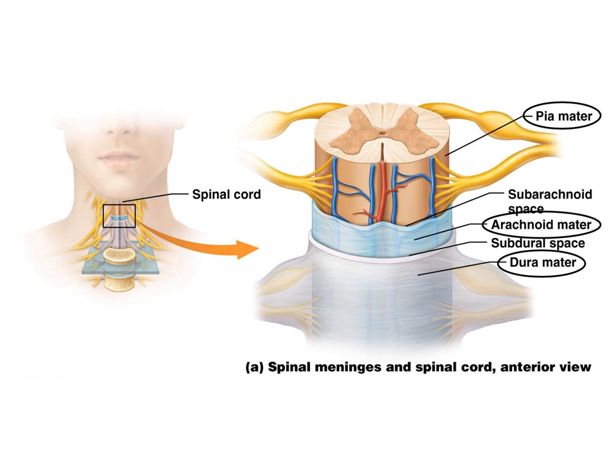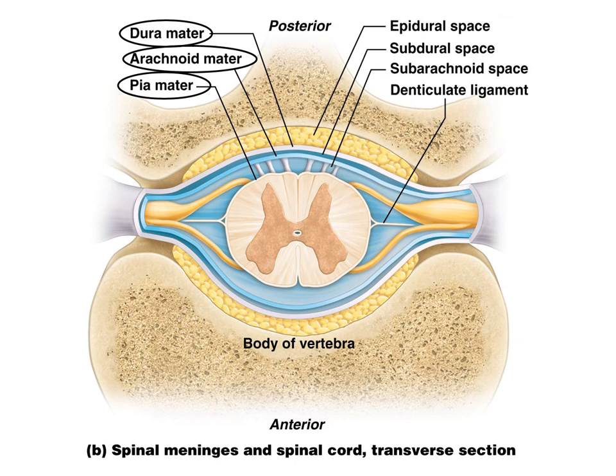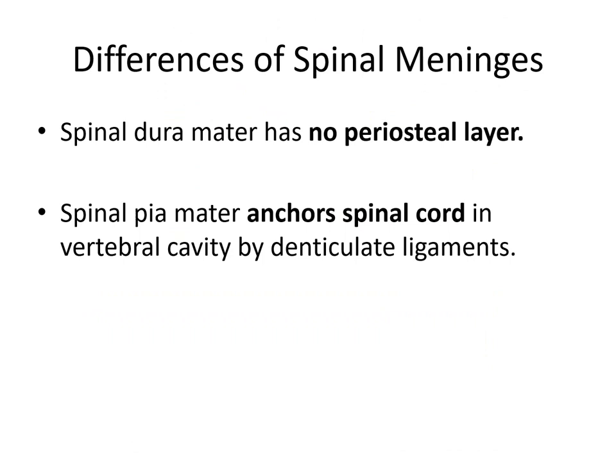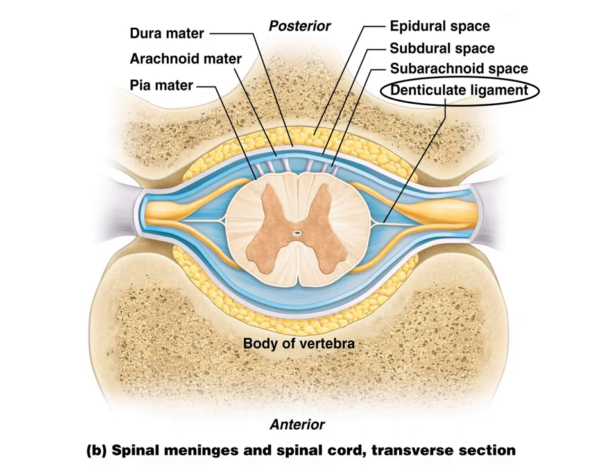Here we see the three layers: from the outermost is the dura mater, then the middle arachnoid mater, and then the pia mater, which is completely on the surface of the spinal cord. The spinal dura mater has no periosteal layer, and the spinal pia mater anchors the spinal cord in the vertebral cavity by denticulate ligaments.